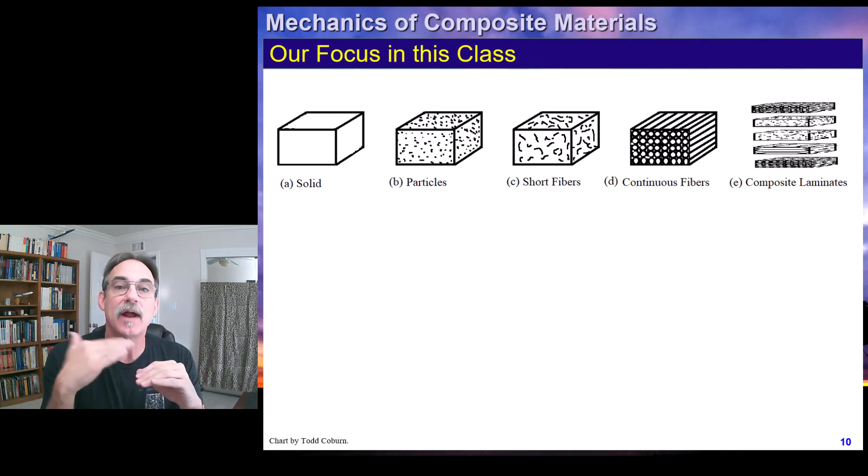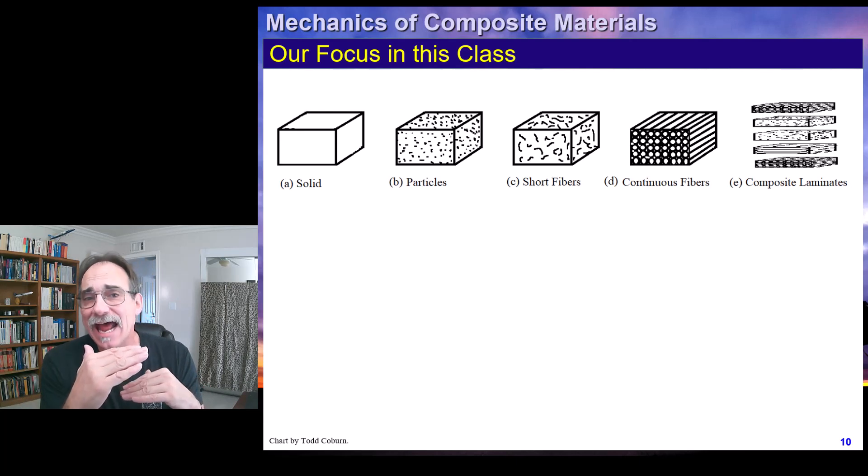So one way of introducing more advantages of different materials being added together, which we're calling composite, is to make a laminate product where we have layers of material. And the way we're going to do this is we're going to characterize the capability of each layer, the strength, stiffness, and other properties. Strength, stiffness, so we can focus on each layer and figure out its primary properties.